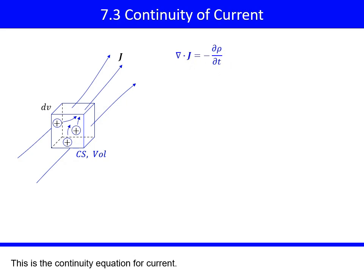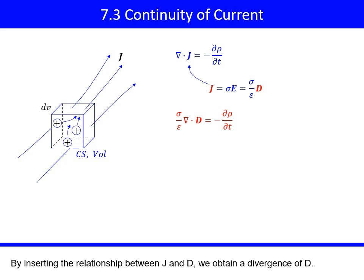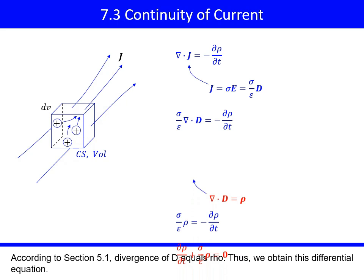This is the continuity equation for current. By inserting the relationship between J and D, we obtain a divergence of D. According to section 5.1, divergence of D equals rho. Thus, we obtain this differential equation.